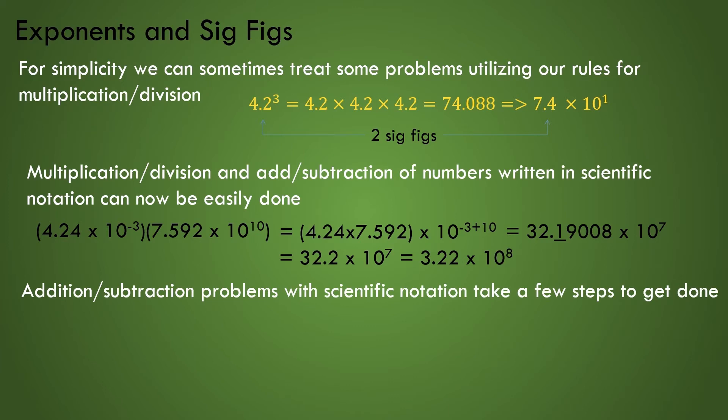When doing an addition-subtraction problem, we have to add a few steps. Let's do the subtraction of 4.24 times 10 to the power of minus 3 minus 7.592 times 10 to the power of minus 5. In this problem, we first want to rewrite the quantity so that both numbers have the same base 10 exponents. I find it easier to calculate the sig figs if I make sure that both numbers have an exponential value equal to that of the largest number. In this case, 4.24 times 10 to the power of minus 3.